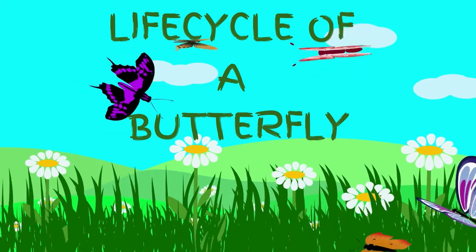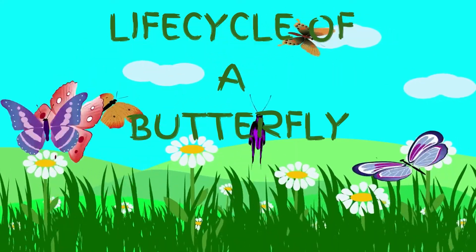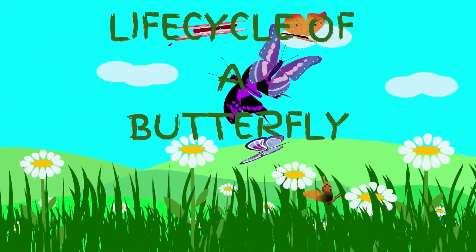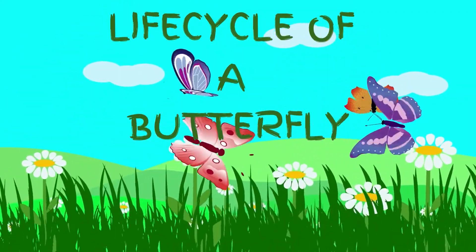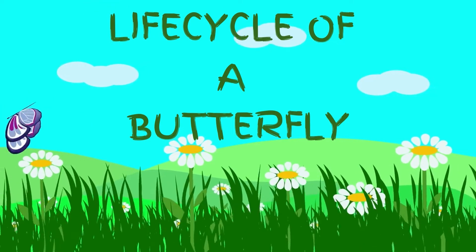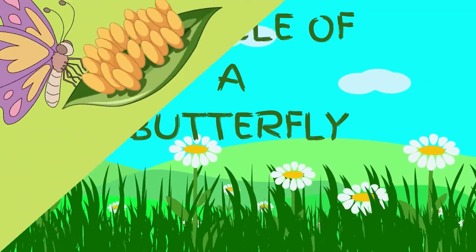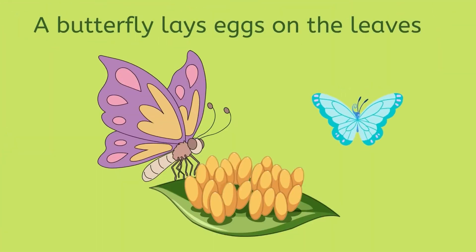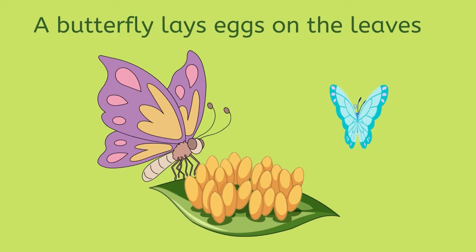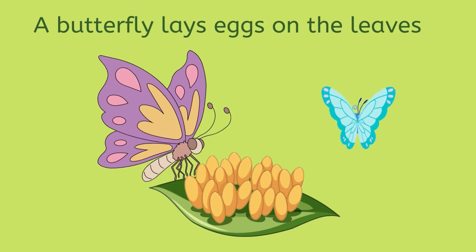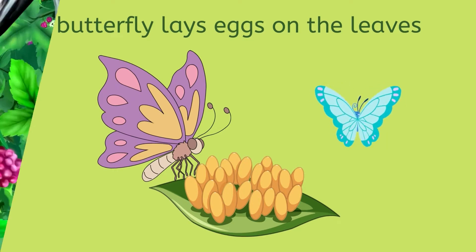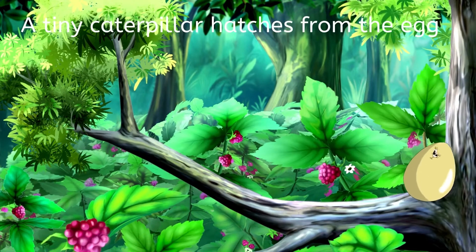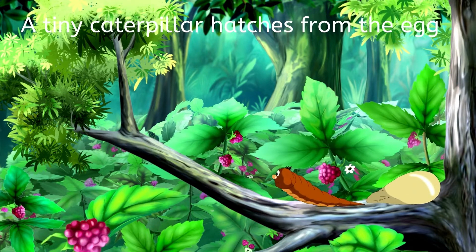Life cycle of a butterfly. A butterfly lays eggs on the leaves of a plant. One week later, a tiny caterpillar hatches from the egg.